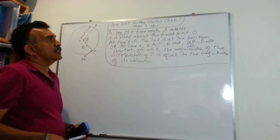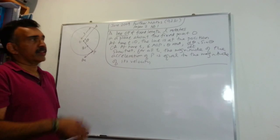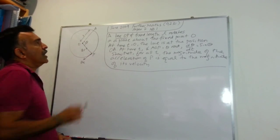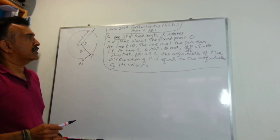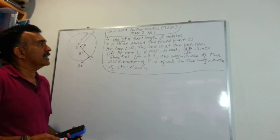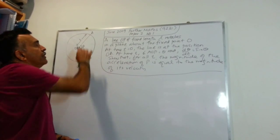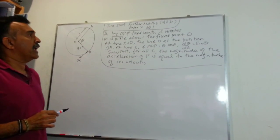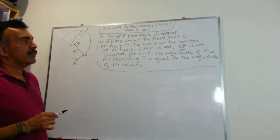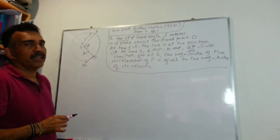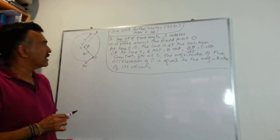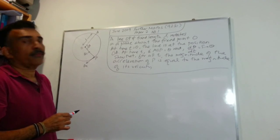I've drawn a picture here so that we can follow along. We have a line OP of fixed length L that rotates about the fixed point O. At time t equals 0, the line is at position OA. At time t, angle AOP equals θ. We are given dθ/dt equals sin θ. We need to show that for all t, the magnitude of the acceleration of P is equal to the magnitude of its velocity.